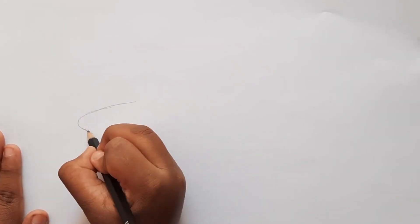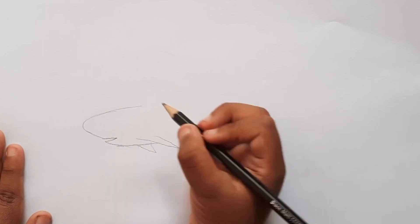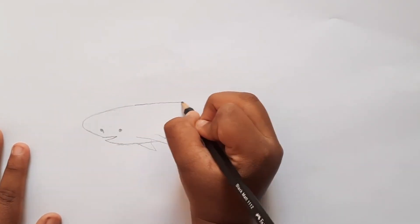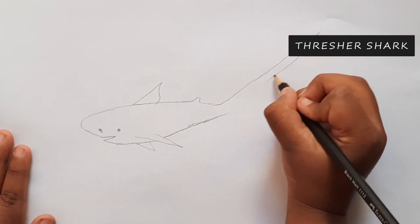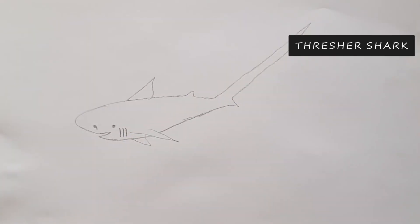Thresher shark. They're unique because they have a very long tail. They use the tail as a weapon for hunting. They're strong active swimmers. Wow, see its long tail.